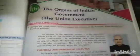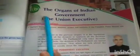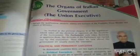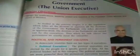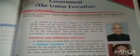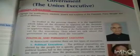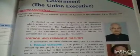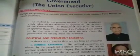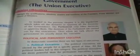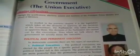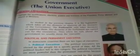Class 8, let's start Chapter 1B — the organs of the Indian government, the Union Executive. In this chapter, we'll discuss the qualifications, elections, procedure of elections, powers and functions of the President, Prime Minister, and the Council of Ministers.